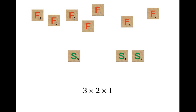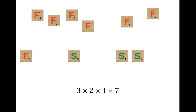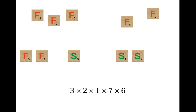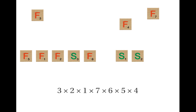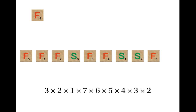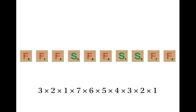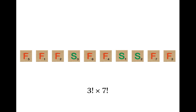Next, we need to take out the F's and see how many ways there are of putting those back into the word. To begin with, we have seven F's, so there are seven possibilities for the first replacement. Now there are only six F's left, so there are six possibilities for the second letter. Now there are five, so five possibilities for the third letter, and so on. The total number of ways of rearranging the letters to spell the same word is three times two times one times seven times six times five times four times three times two times one, which is three factorial times seven factorial.